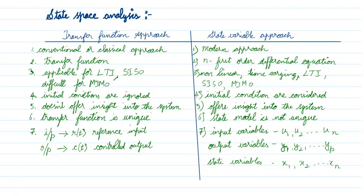In the transfer function approach, we take the Laplace transform of the output divided by the Laplace transform of the input at zero initial conditions. In the state variable approach, we take n first-order differential equations — like dx/dt, dy/dt. The transfer function approach is applicable for an LTI (linear time invariant) SISO (single input, single output) system and is more difficult for MIMO (multiple input, multiple output). But the state variable approach is applicable for non-linear, time-varying, LTI, SISO, and MIMO systems. From an academic/undergraduate point of view, we take only the linear time invariant system.